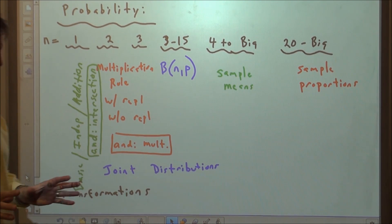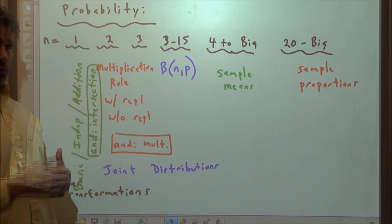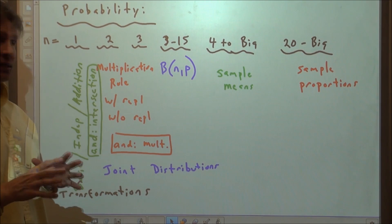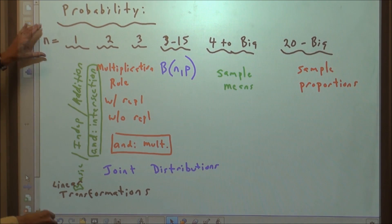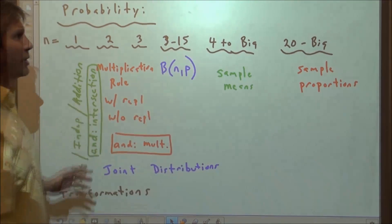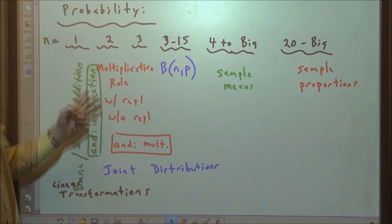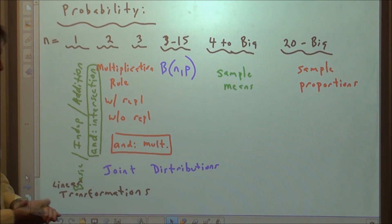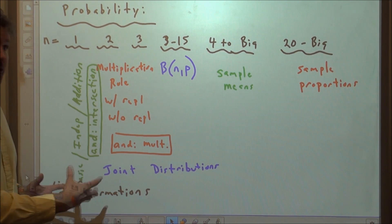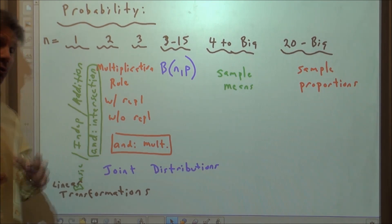This is a short video on joint distributions involving discrete random variables, which have a countable number of outcomes. Going back to probability descriptions with sample sizes, when we're sampling two things, there's a good chance we're doing a joint distribution of some sort, or maybe a linear transformation on two jointly distributed variables.